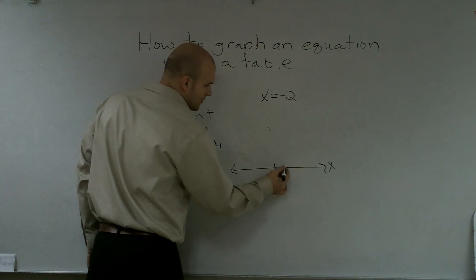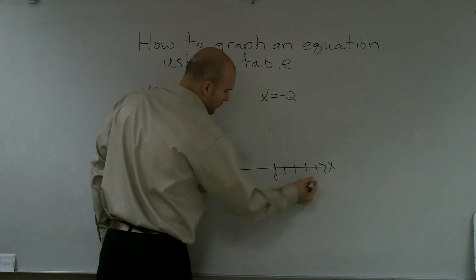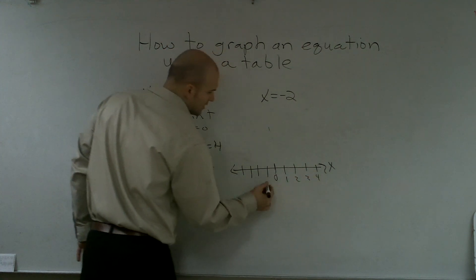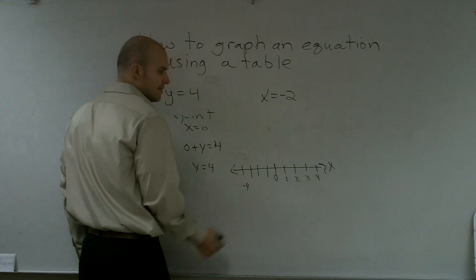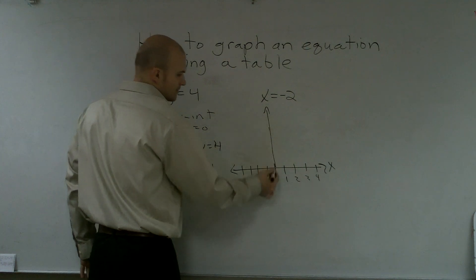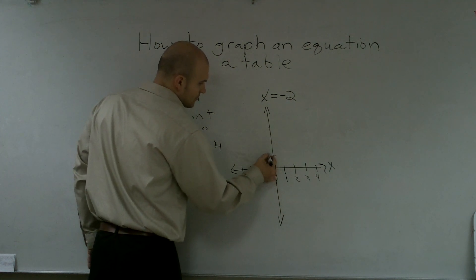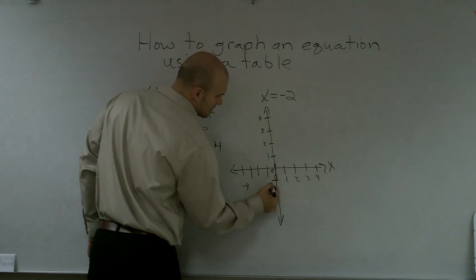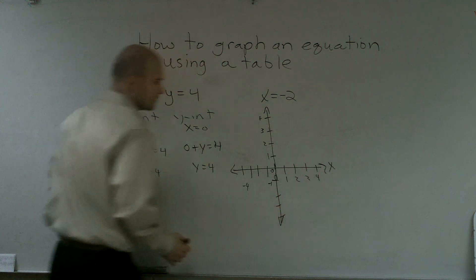That's your x-axis. You have 0, 1, 2, 3, 4, and the negatives. Then you have a y-axis, which is 0, 1, 2, 3, 4, and negative 1, 2, 3, 4.